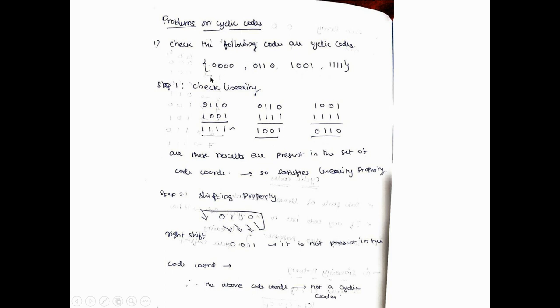We leave 0000 aside, because adding zero with any other term gives that same value. We take 0110 and add it with 1001. Binary addition: 0+1=1, 1+0=1, 1+0=1, 0+1=1, giving output 1111. This 1111 is present in the given set of codes. Whatever the output is, it should be part of the input set of codes, and here the four-ones result is indeed part of that set.